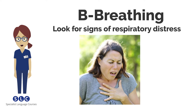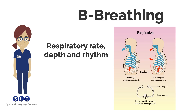A rattling noise indicates the patient is unable to cough enough to clear secretions. Stridor or wheeze is often seen in partial airway obstruction. Count the respiratory rate — the normal rate is 12 to 20 breaths per minute. A respiratory rate over 25 breaths per minute is a marker of illness and deterioration.